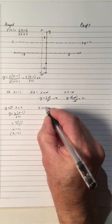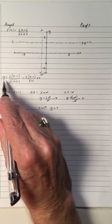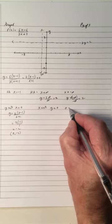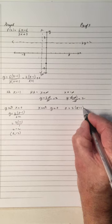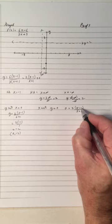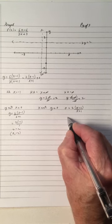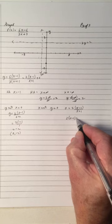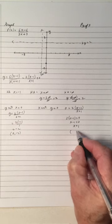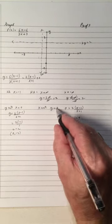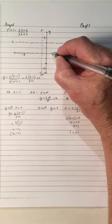So we have the point (0, negative 2). Now for the x-intercept, let y equal 0. If this fraction equals 0, the numerator must equal 0. So 2 times (x-1) equals 0, which gives x minus 1 equals 0, so x equals 1. Therefore when y is 0, x is 1 — the x-intercept is at (1, 0), which is right there.